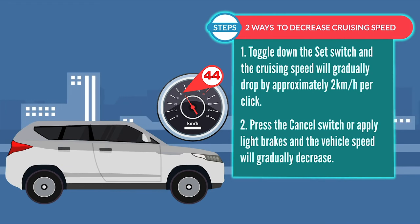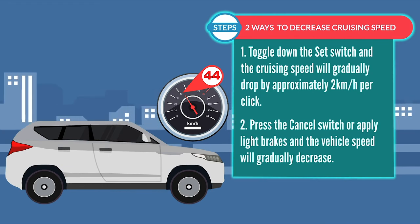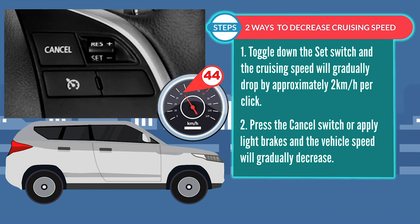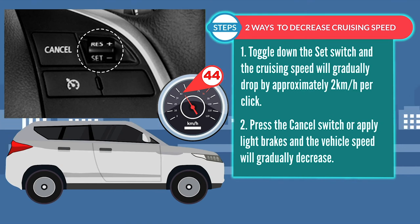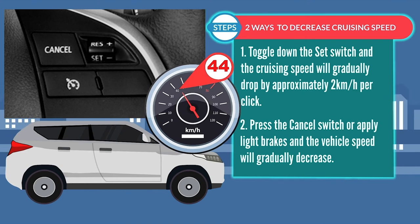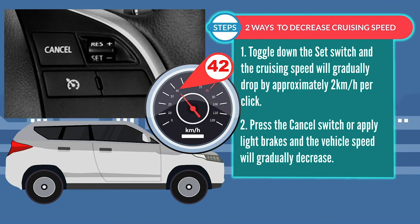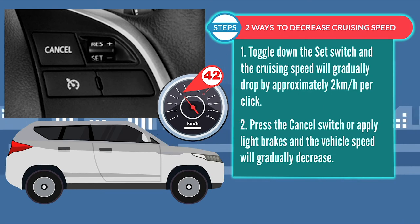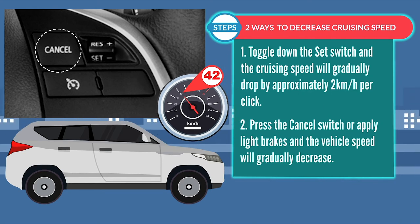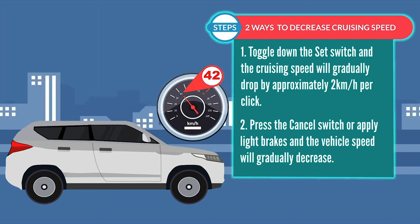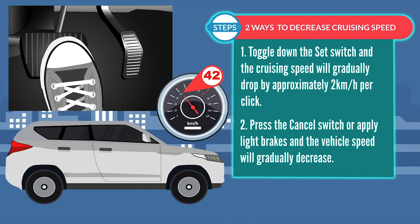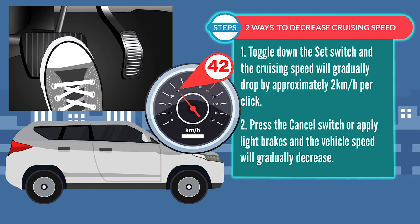There are two ways to decrease the set speed. First, toggle down the set switch and the cruising speed will gradually drop by approximately 2 kmph per click. You can also press the cancel switch or apply light brakes and the vehicle speed will gradually decrease.